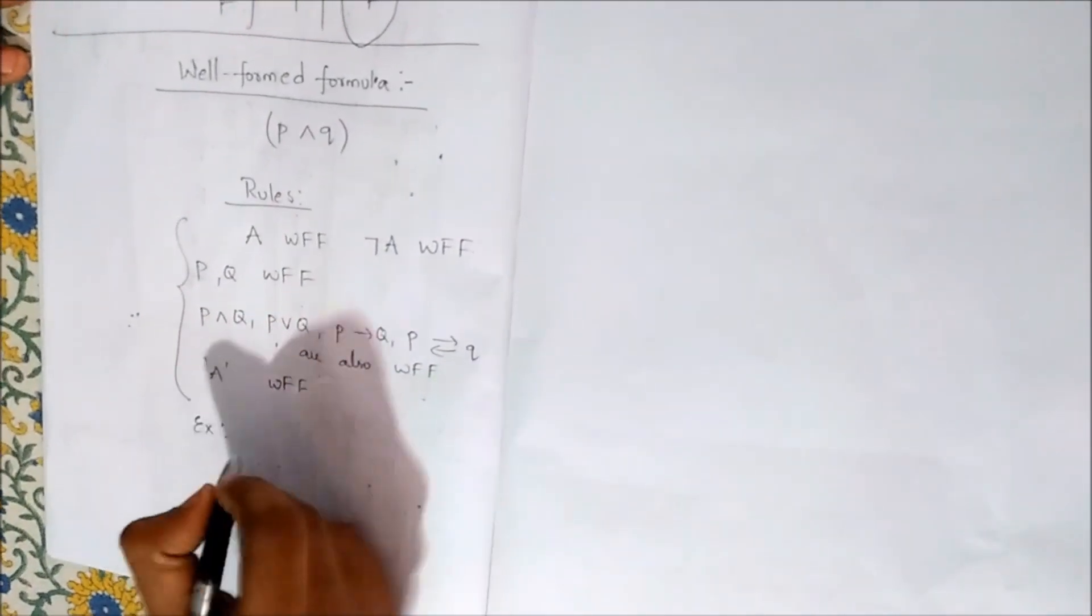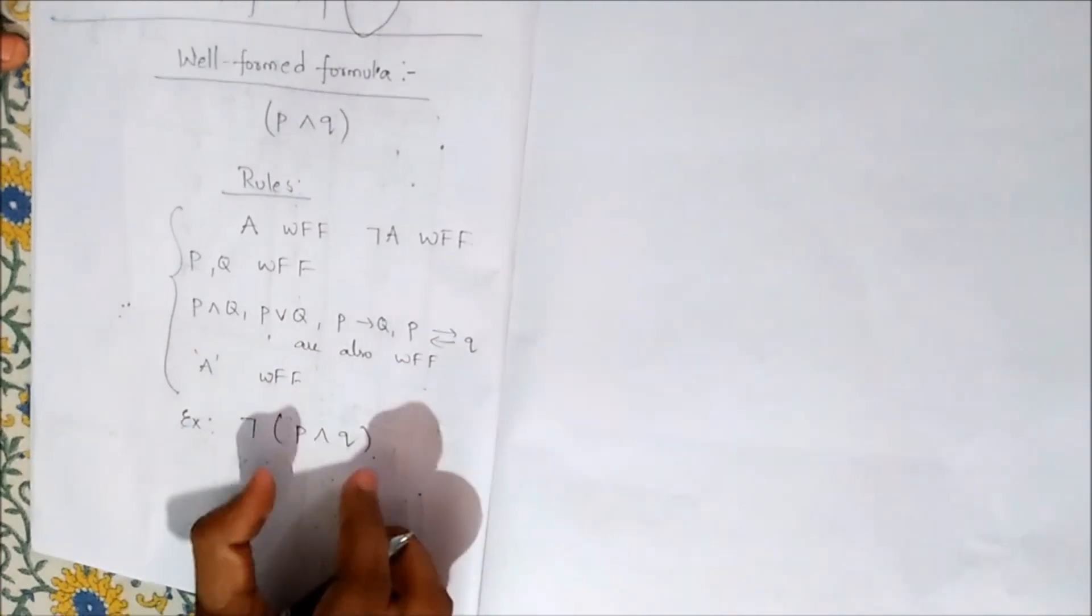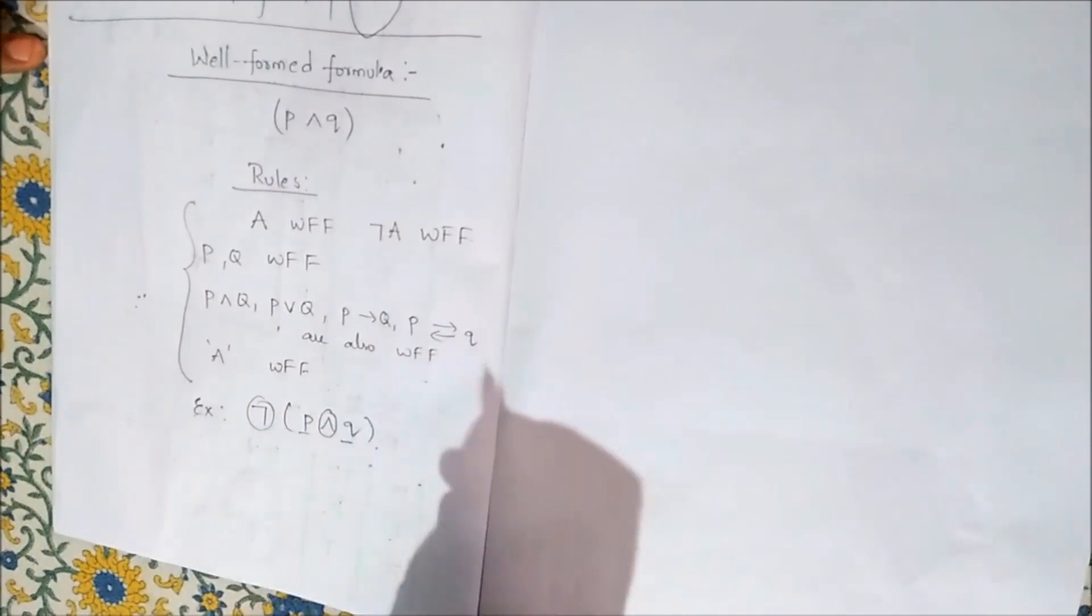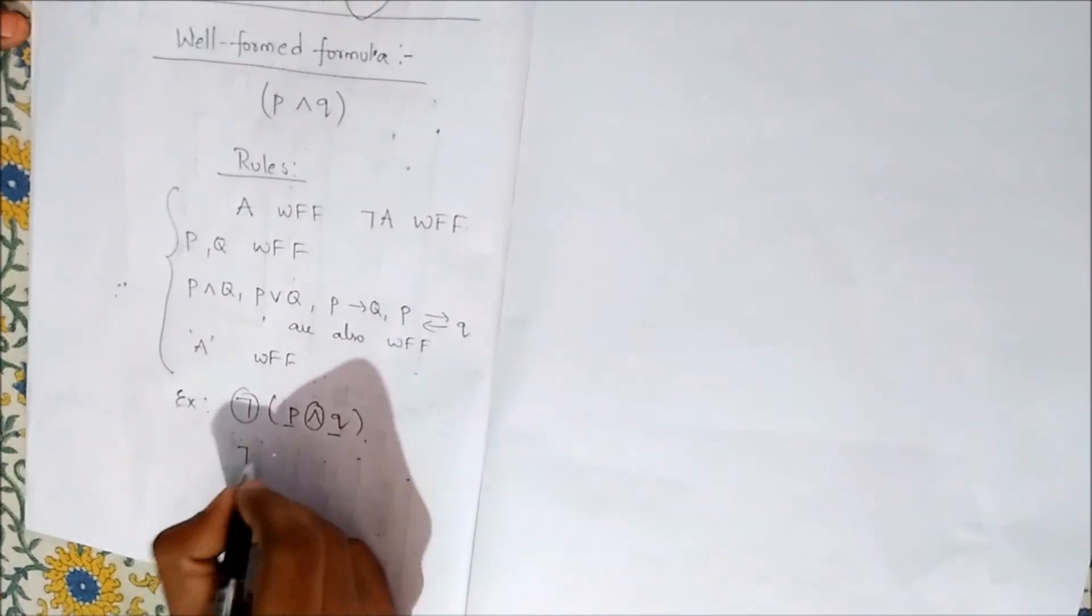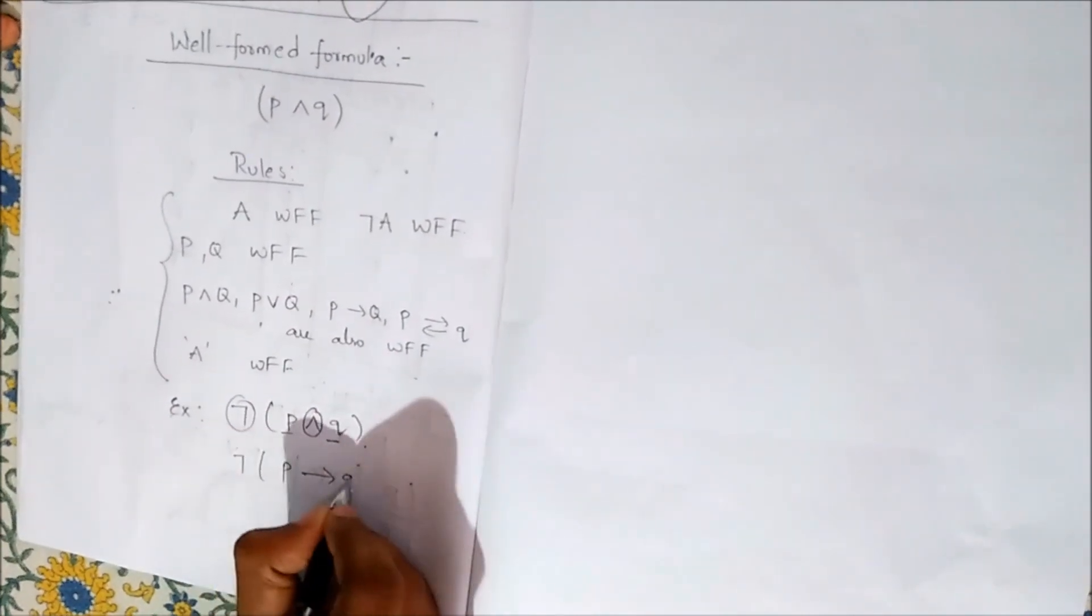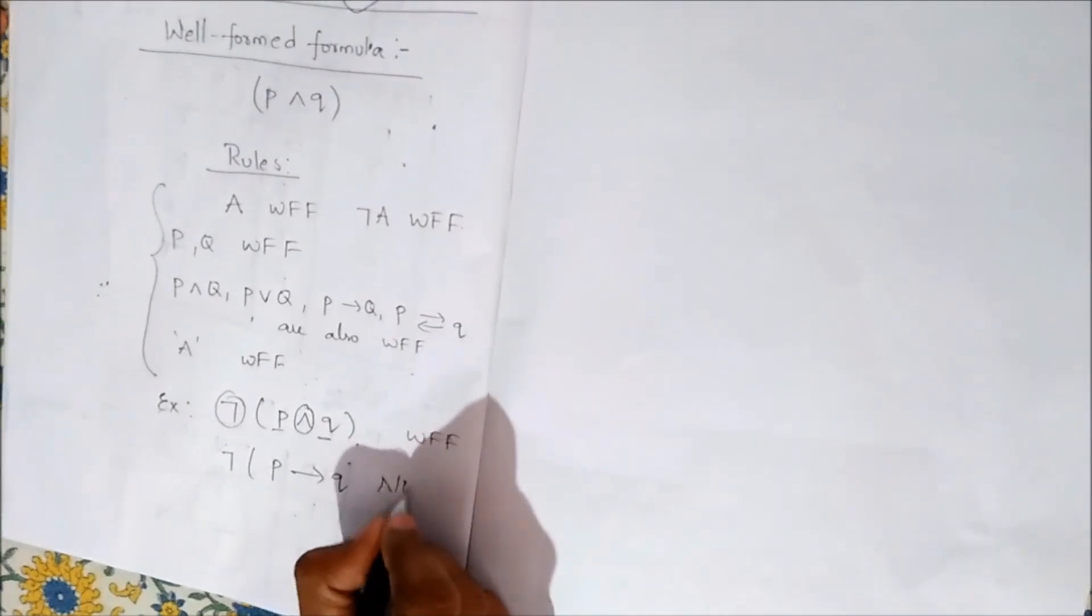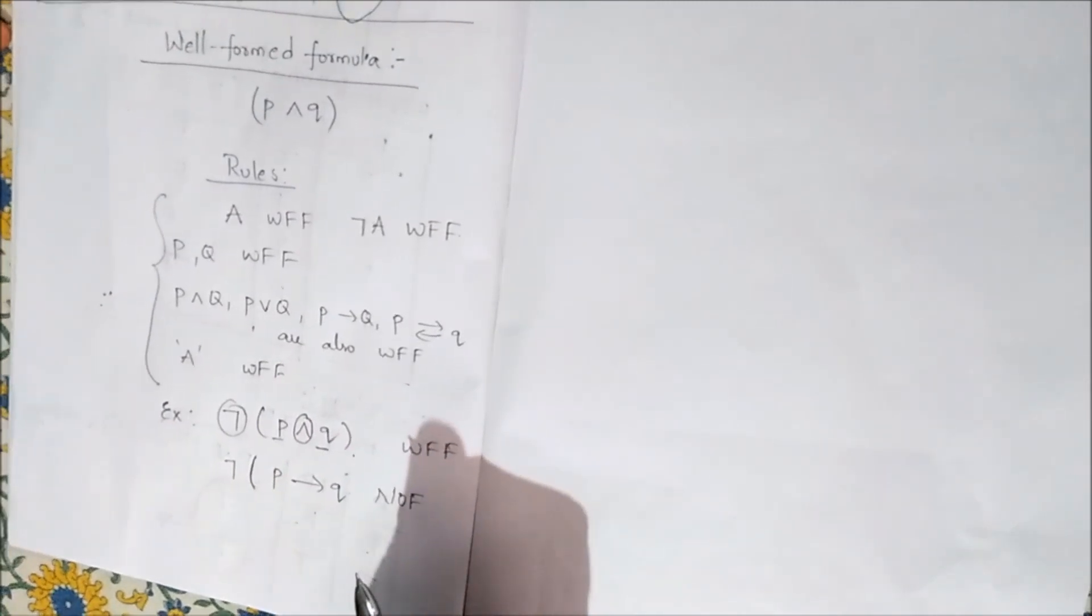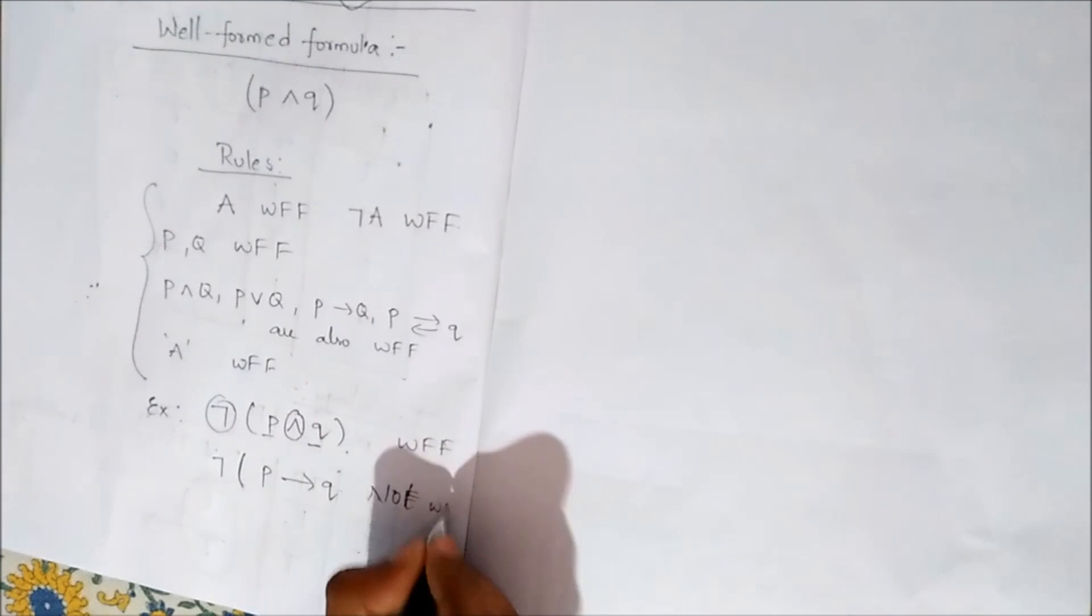For example, consider the example here we have parenthesis, connectives and symbols. It is a well formed formula. If we take another example, it is not a well formed formula because here the parenthesis is open and there is no closing parenthesis. So we can say that it is not a well formed formula.